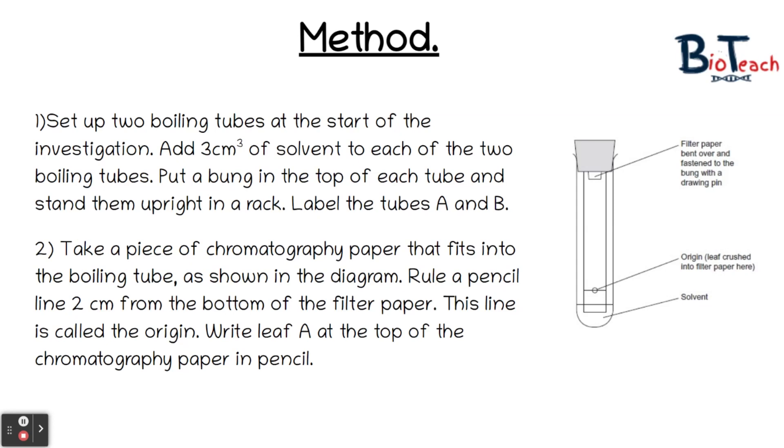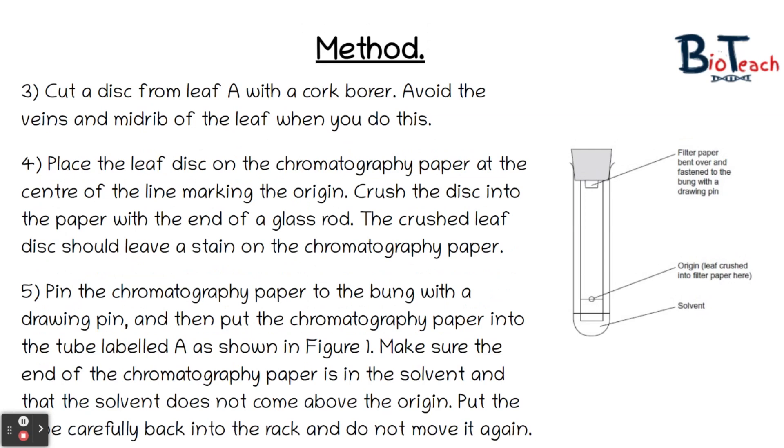You will take a piece of chromatography paper that fits into the boiling tube. Usually this will be cut for you by the teachers or the technicians, but you may need to cut it yourself. You will rule a pencil line about two centimetres from the bottom of the filter paper. This line is called the origin line. At the top of the chromatography paper in pencil you will write leaf A. You will do the same for the second leaf as well.